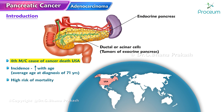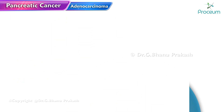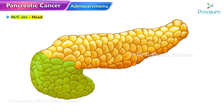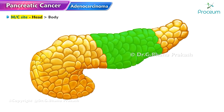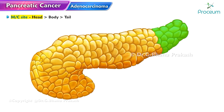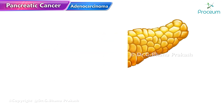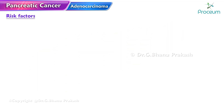Pancreatic cancer is most commonly an adenocarcinoma and is most commonly found in the head of the pancreas. The body of the pancreas is the next most common site, and the tail of the pancreas is the least common.